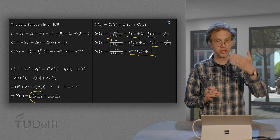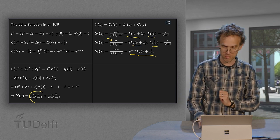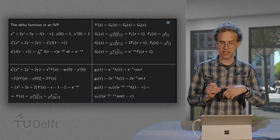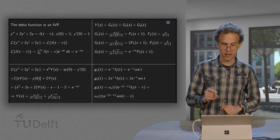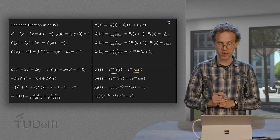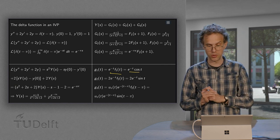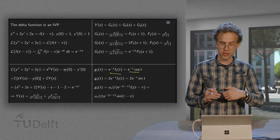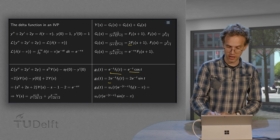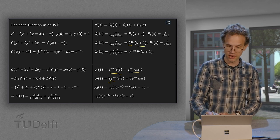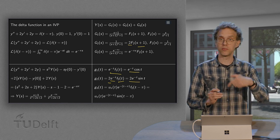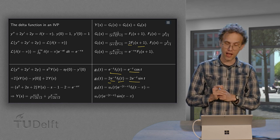So we have G1, G2 and G3 and we can transform them back, all three of them. Because the capital F1 of s can be transformed back to a cosine of t, so G1 of t equals e to the power minus t times the cosine of t. The F2 of s can be transformed back to a sine of t. So this gives us the G2 of t gives us a 2 times e to the power minus t times the sine of t.